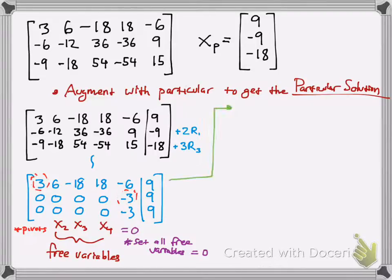So what you want to do is write out the equations when you set x2, x3, and x4 equal to 0. So you get 3x1 minus 6x5 equals 9. And then the two equations below are the same, negative 3x5 equals 9.